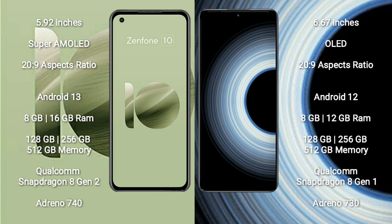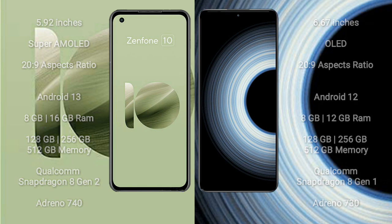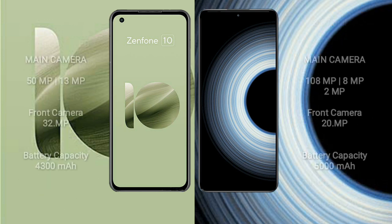Redmi K50 Ultra runs on the Android 12 operating system. It comes with 8GB or 12GB RAM and 128GB, 256GB, or 512GB internal storage, powered by a Qualcomm Snapdragon 8 Gen 1 processor and GPU Adreno 730.